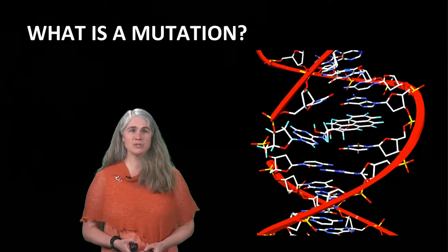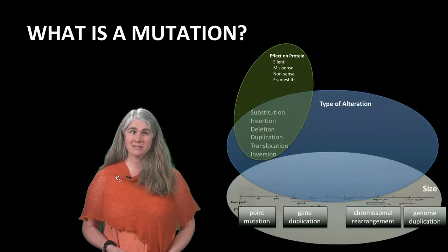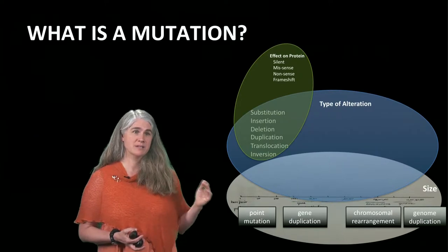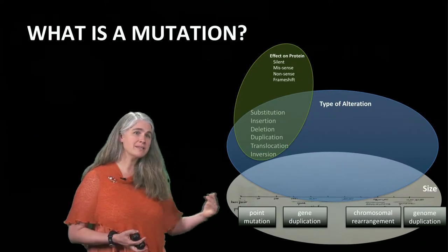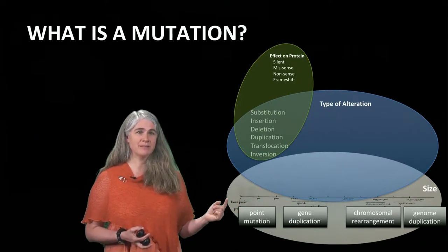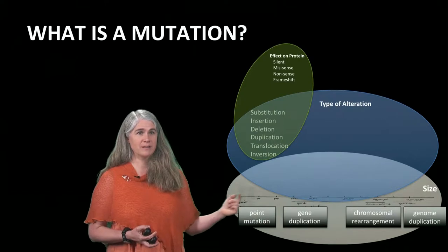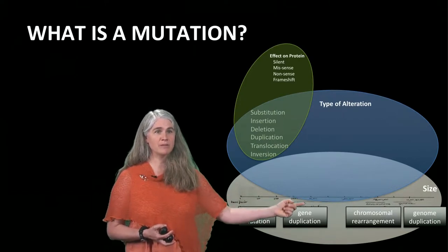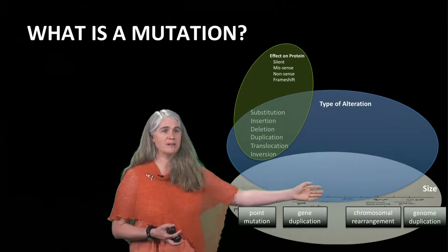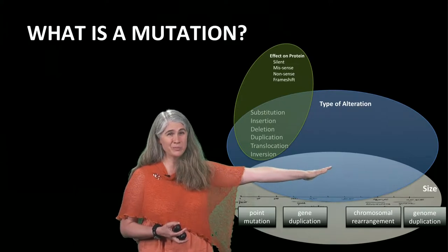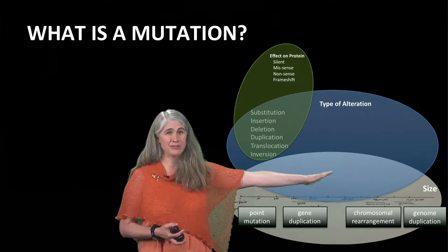There are lots of ways you can change DNA, and therefore there are lots of different kinds of mutations. You can organize them in different ways — for example, by size. Mutations can happen at the level of a single base pair, at many base pairs, at the level of a gene, all the way out to whole chromosomes, and even duplication of entire genomes.